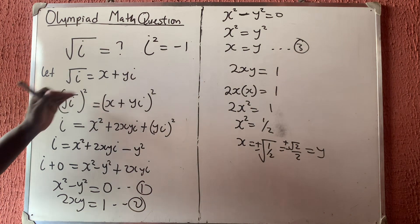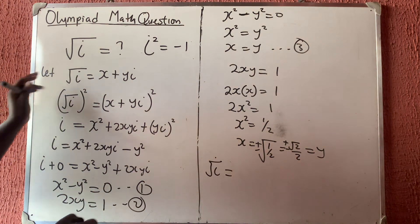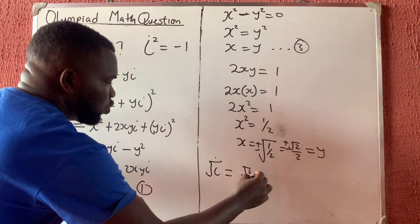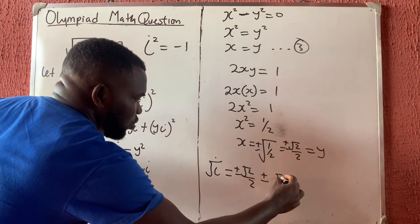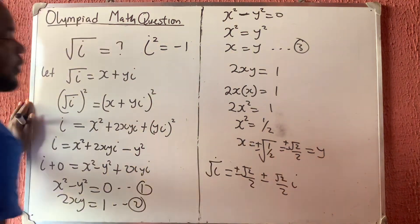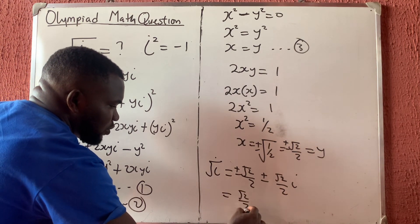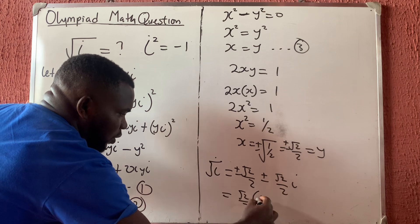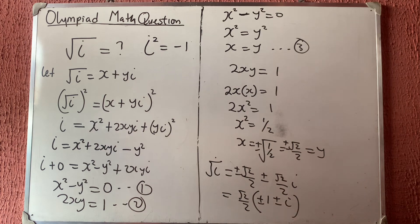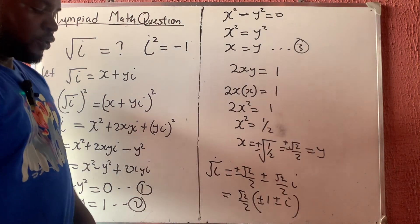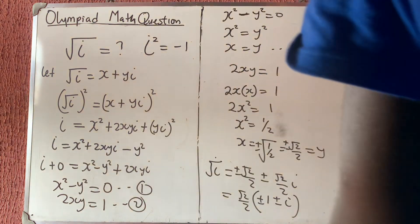Since x equals y, the square root of i equals plus or minus root 2 over 2, plus or minus root 2 over 2 times i. Factoring out, this is root 2 over 2 times the quantity plus or minus 1 plus or minus i. Any of these combinations is your result. Thank you for watching — please like, share, and subscribe.